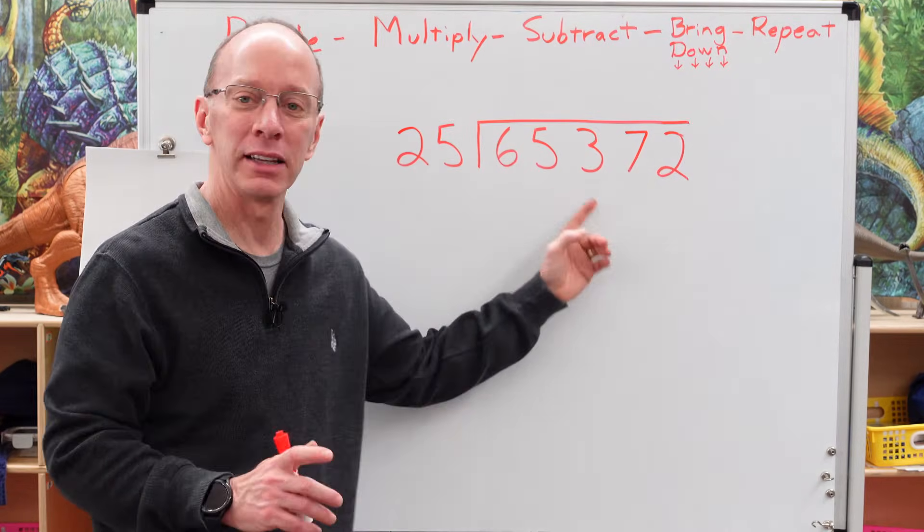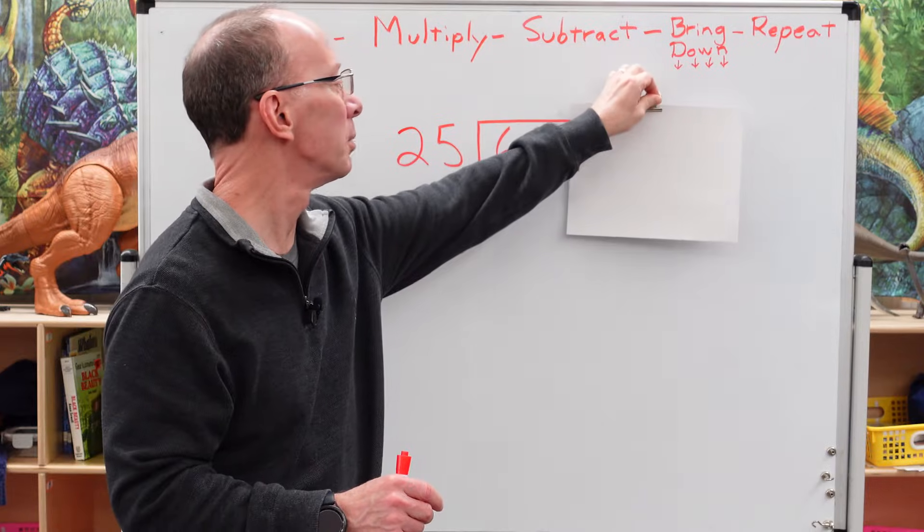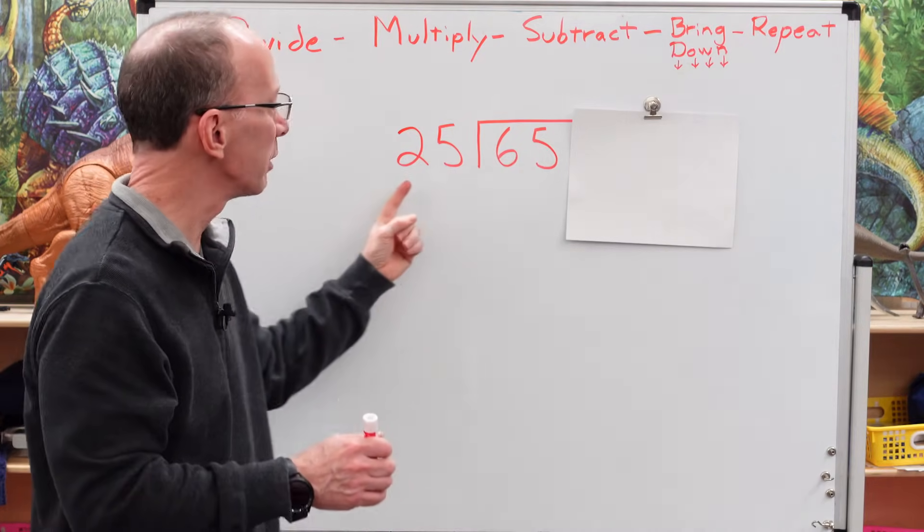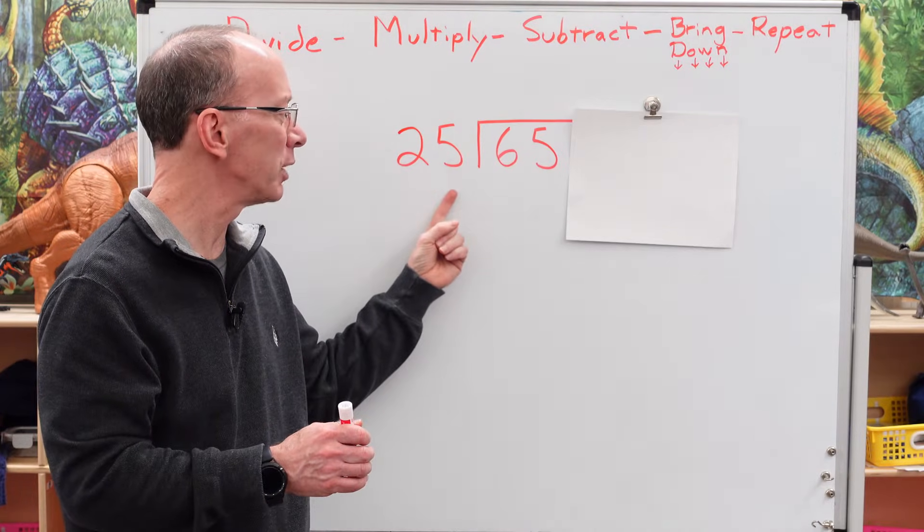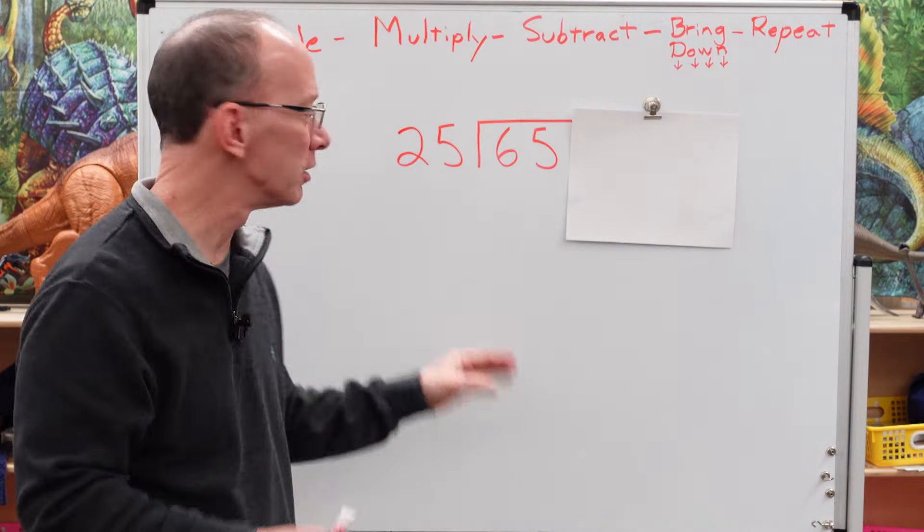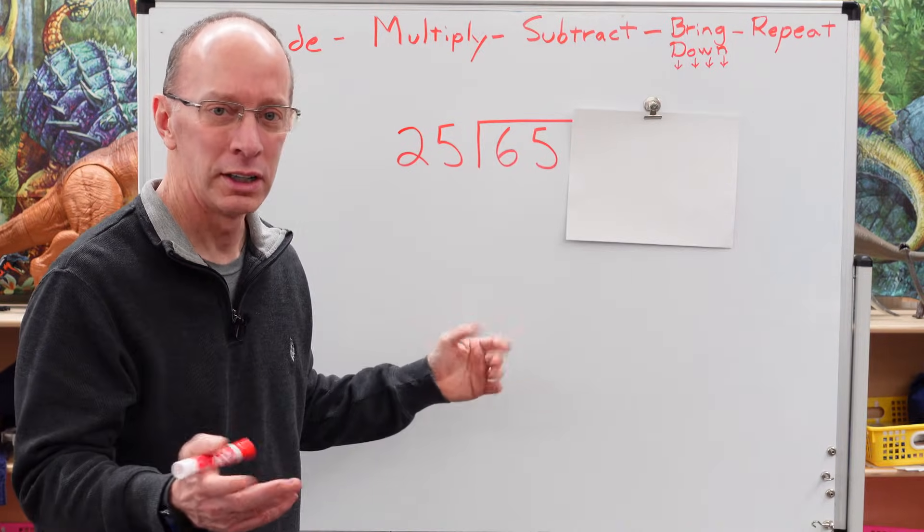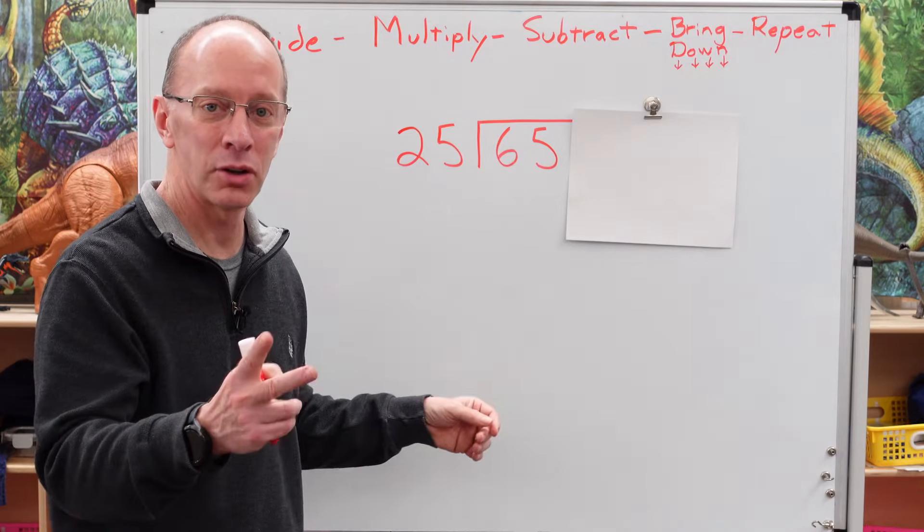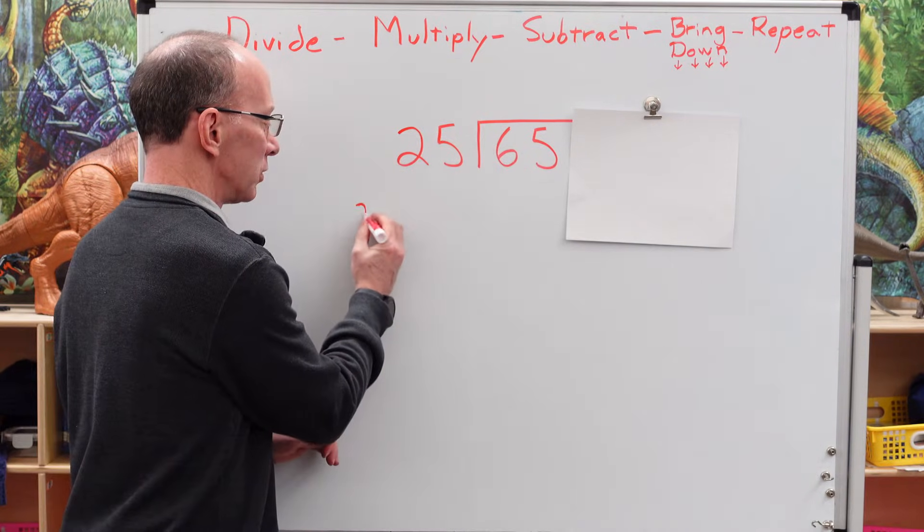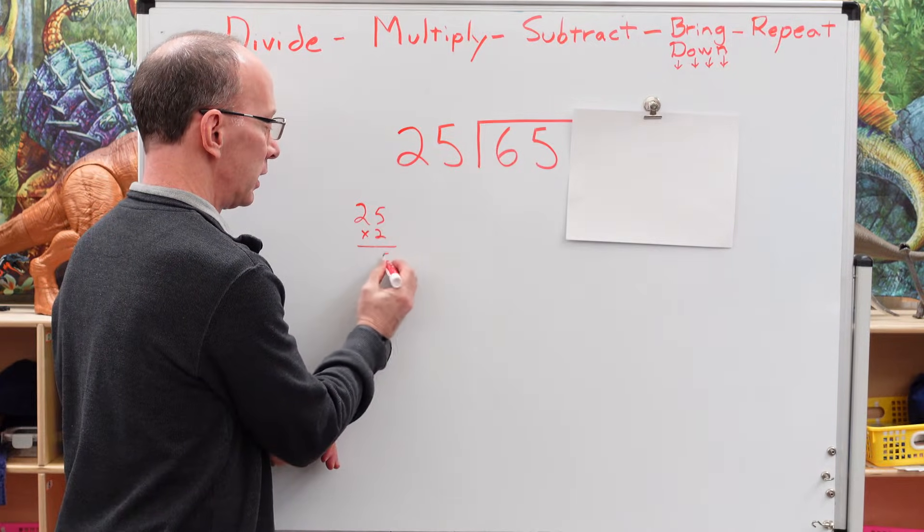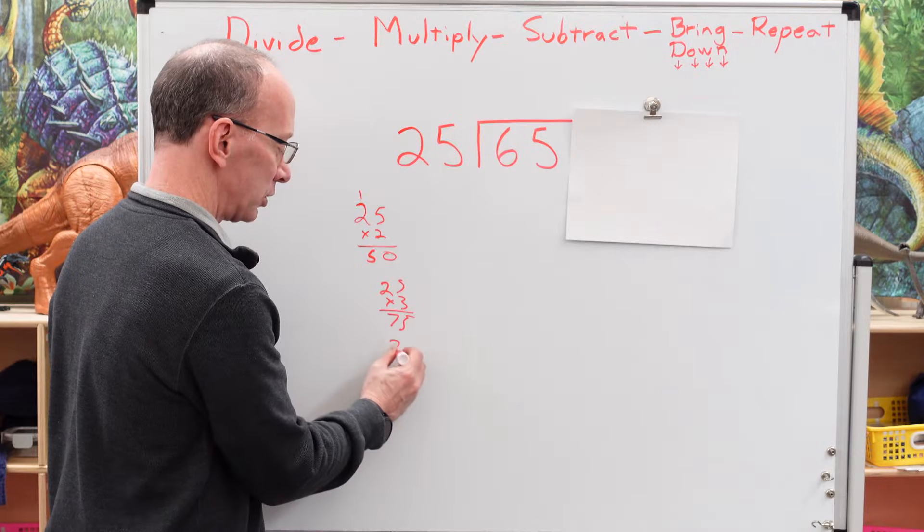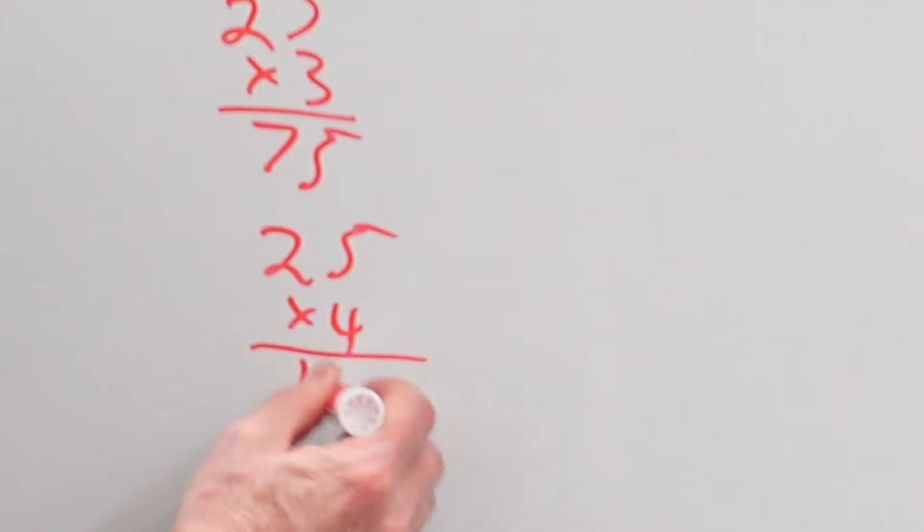When I deal with a big number like this, sometimes it might be helpful to take a piece of paper and cover up some of those numbers so it doesn't look too threatening. I'm going to be working with the number 25, and I've got to figure out how many times can I put 25 into 65. Like on my other videos, this number 25 is like a quarter. If you have one quarter that's 25 cents, two quarters is 50 cents, and three quarters is 75 cents. So 25 times 2 is 50, 25 times 3 would be 75, and of course 25 times 4 would be 100.